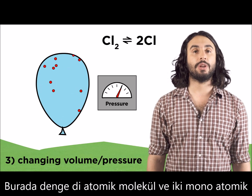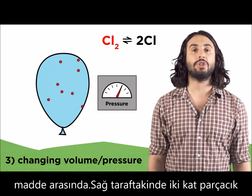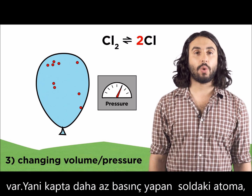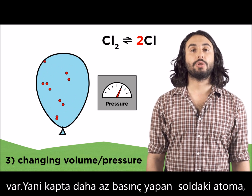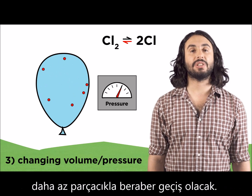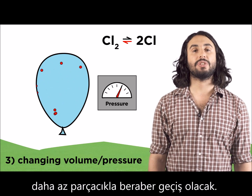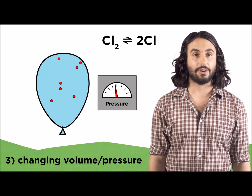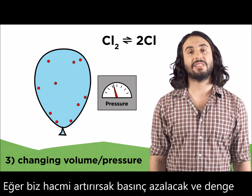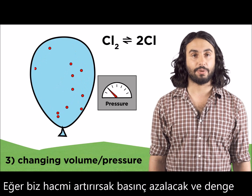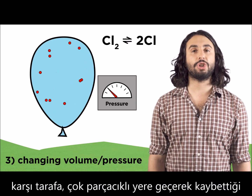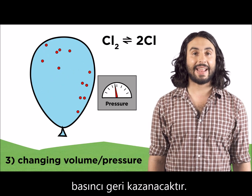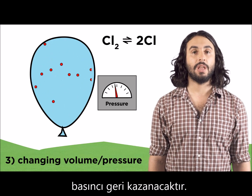In this equilibrium between a diatomic molecule and two monoatomic species, the right side has twice as many particles. So shifting left means atoms fusing together, resulting in fewer particles, which lowers the pressure on the container. If we increase the volume, thereby lowering the pressure, the equilibrium would shift towards the side with more particles in order to regain some of the lost pressure.